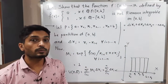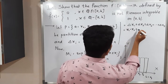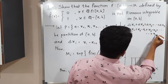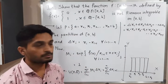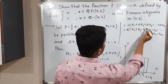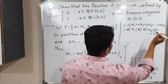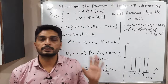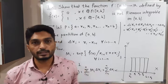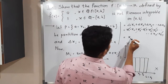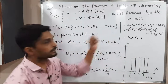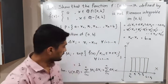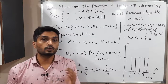We can cancel terms: x₁ and −x₁ cancel, x₂ and −x₂ cancel, x₃ and −x₃ cancel, and so on — all intermediate terms cancel. So only the first and last terms remain: xₙ − x₀ = b − a. Therefore the upper sum U(P,f) = b − a for any partition P.